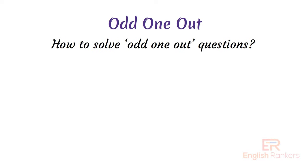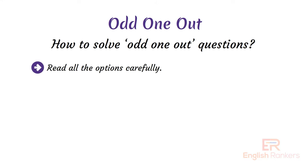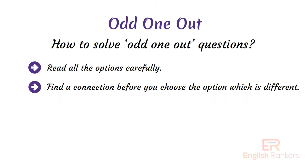How to solve odd one out questions? There are no specific rules for this. Each time you will be given different types of problems. You should be logical and intelligent for finding the answer. Though there are no specific rules, you can follow the steps below — these can help you to some extent. Read all the options carefully and find a connection.